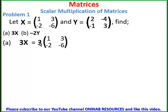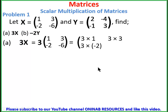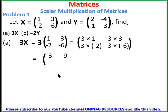Multiplying every entry by 3, we have: 3 times 1, 3 times 3 in the first row; in the second row, 3 times negative 2 and 3 times negative 6. Simplifying: 3 times 1 gives 3, 3 times 3 gives 9, 3 times negative 2 gives negative 6, and 3 times negative 6 gives negative 18.